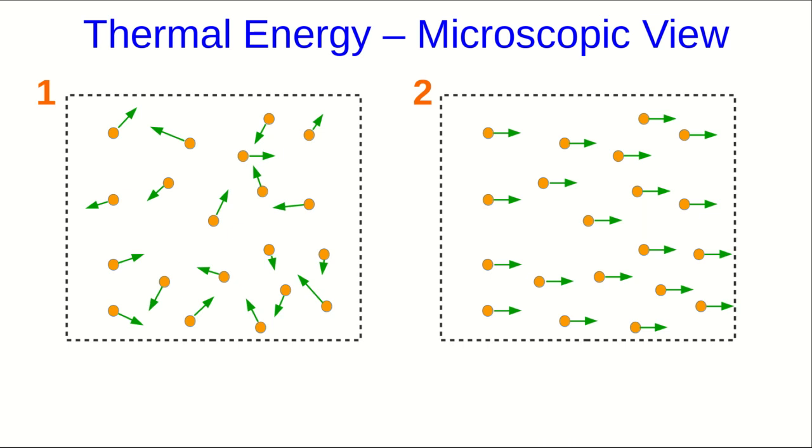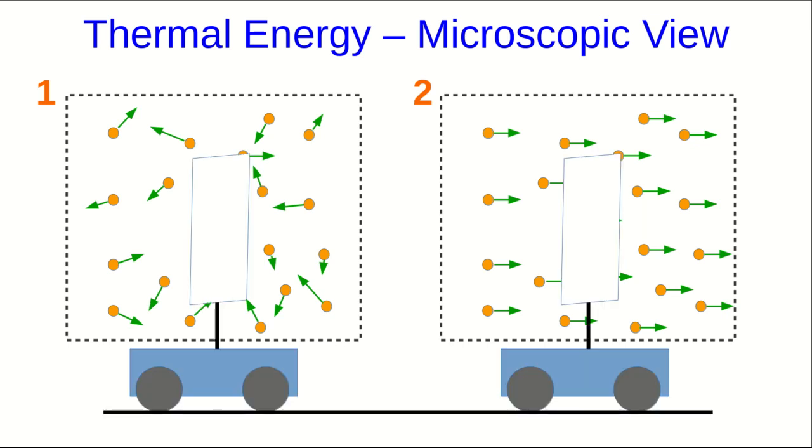In case one, all of the air molecules are going in different directions at different speeds, whereas in case two, they're all moving with the same velocity. And let's further say that the total kinetic energy of both of these is exactly the same, where what I mean here is we're adding up the kinetic energies of all the molecules. So this is really molecular scale kinetic energy I'm talking about. And let's now imagine we put both of them in contact with something like carts with sails.